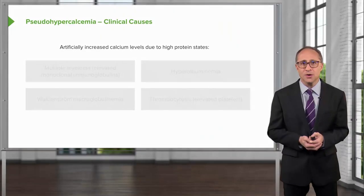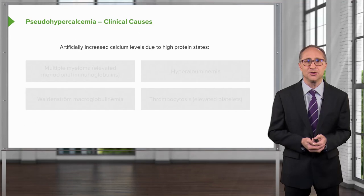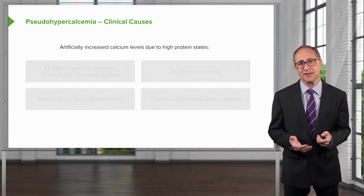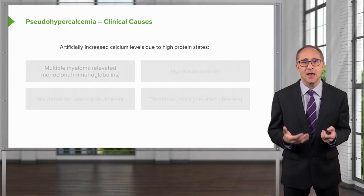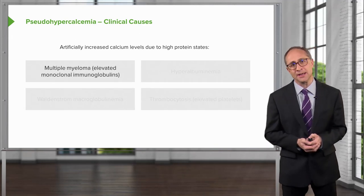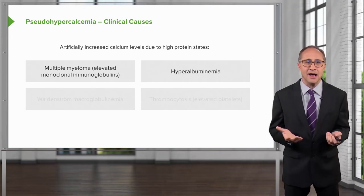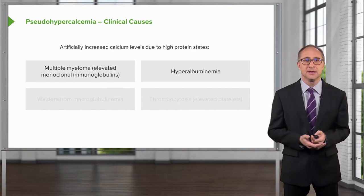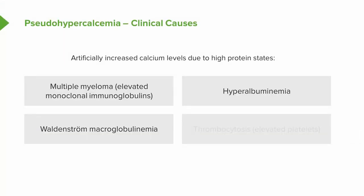The causes of pseudo-hypercalcemia include conditions that increase protein states within the body: multiple myeloma, where there is an elevation of monoclonal immunoglobulins; hyperalbuminemia from numerous causes; Waldenstrom's macroglobulinemia, which is a hematologic disorder; and thrombocytosis, where there is an elevation of platelets.